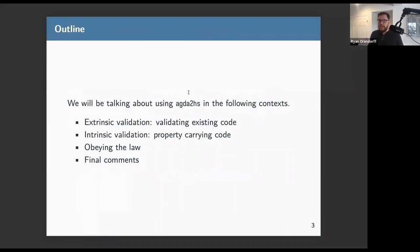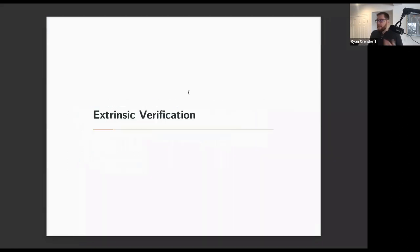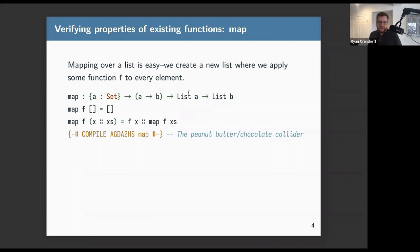In this talk we'll cover a few different things. First, extrinsic validation — validating or proving properties about code you've already written. Next, intrinsic validation — where code actually includes properties you want to hold, carried along with it. That's where dependent types in Agda come in. Then we'll talk about how you might obey the law, and finally some concluding comments.